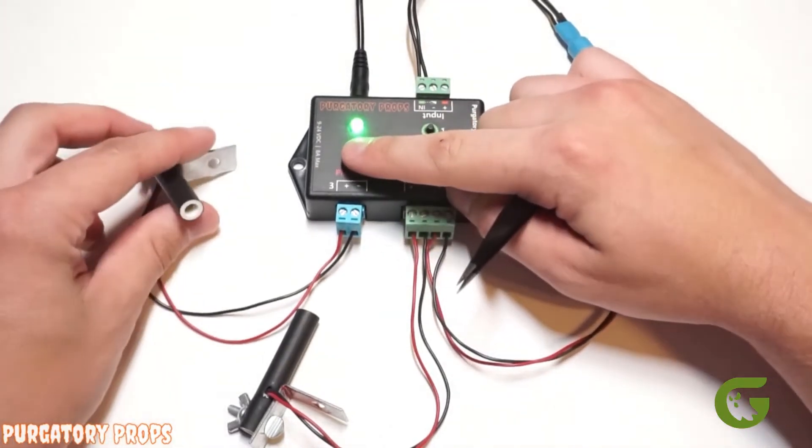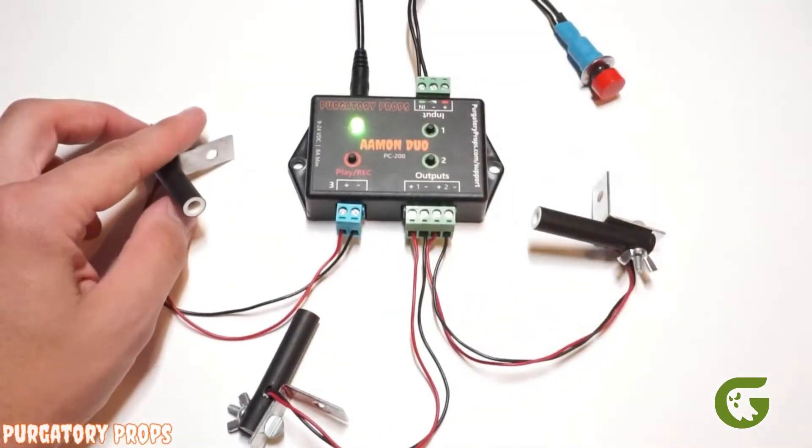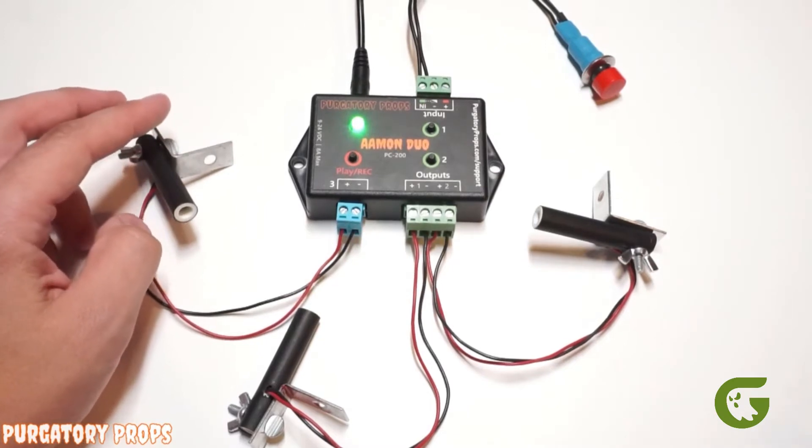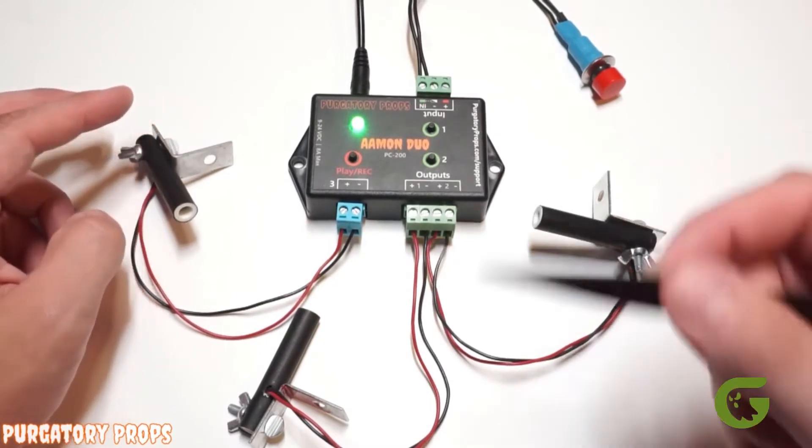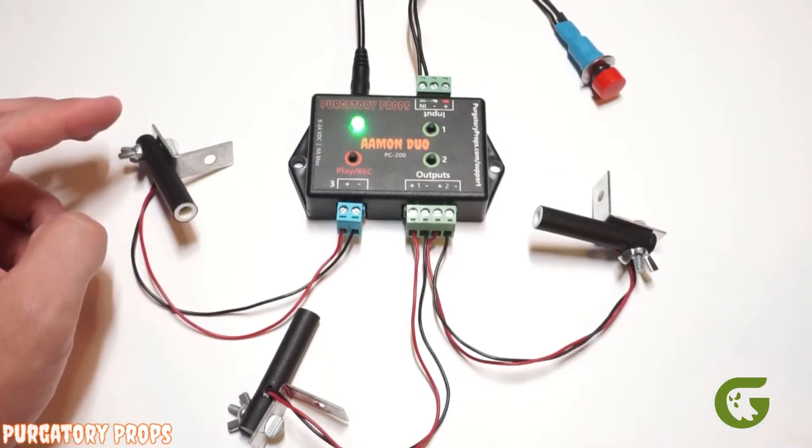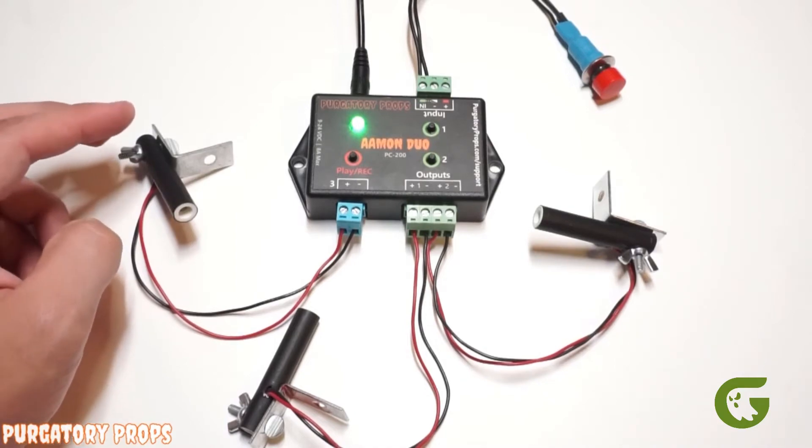So when we play, output 3 is off, and then it's on for one second at the end of the animation. So this can be used to trigger another controller at the end of your animation to start doing something else. So you can use it to daisy chain controllers together.